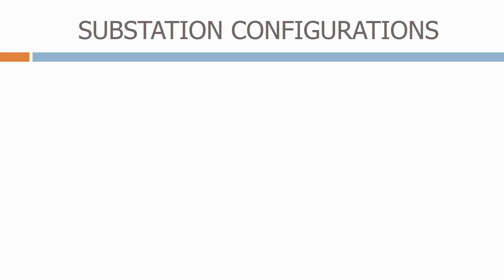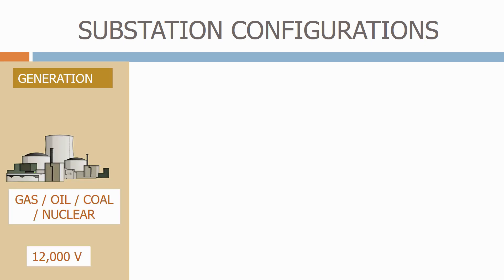Most electrical networks consist of three main parts. Firstly we have the generation — this is where the electricity is produced in a power station, either gas, oil, coal or nuclear. The typical output voltage from the power station is 12,000 volts.